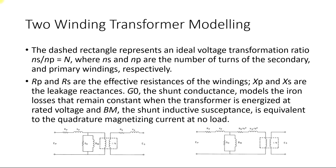The equivalent circuit of a two-winding transformer has a primary winding, where G0 represents the iron losses of the transformer and Bm represents the magnetization current at no load. Then there is a winding representing the transformation ratio, followed by the secondary resistance and impedance. Ep is the primary voltage and Es is the secondary voltage. Whether the transformer is step-up or step-down depends on this transformation ratio value.